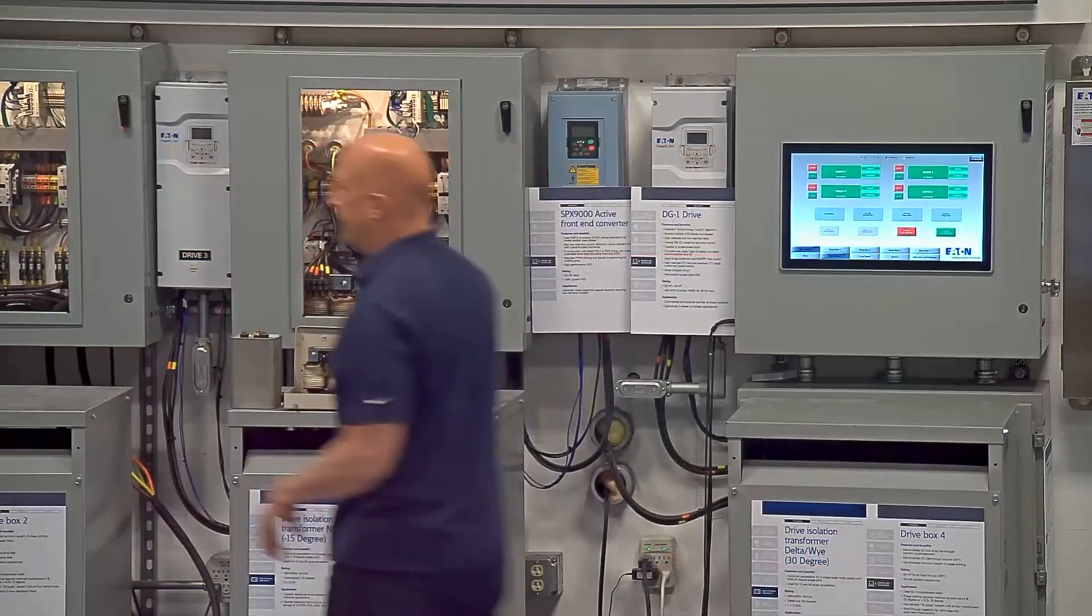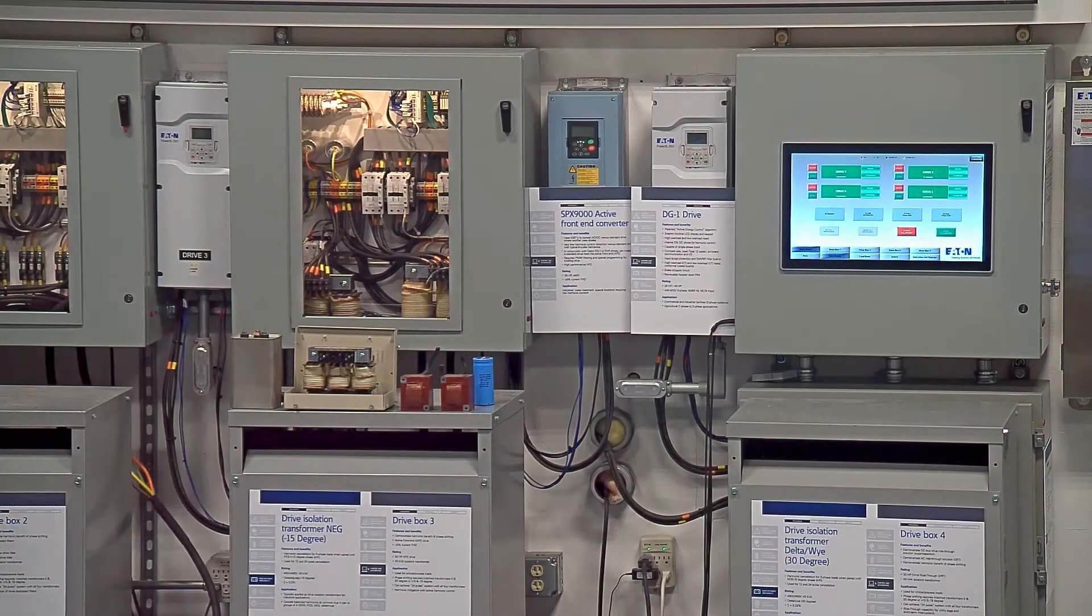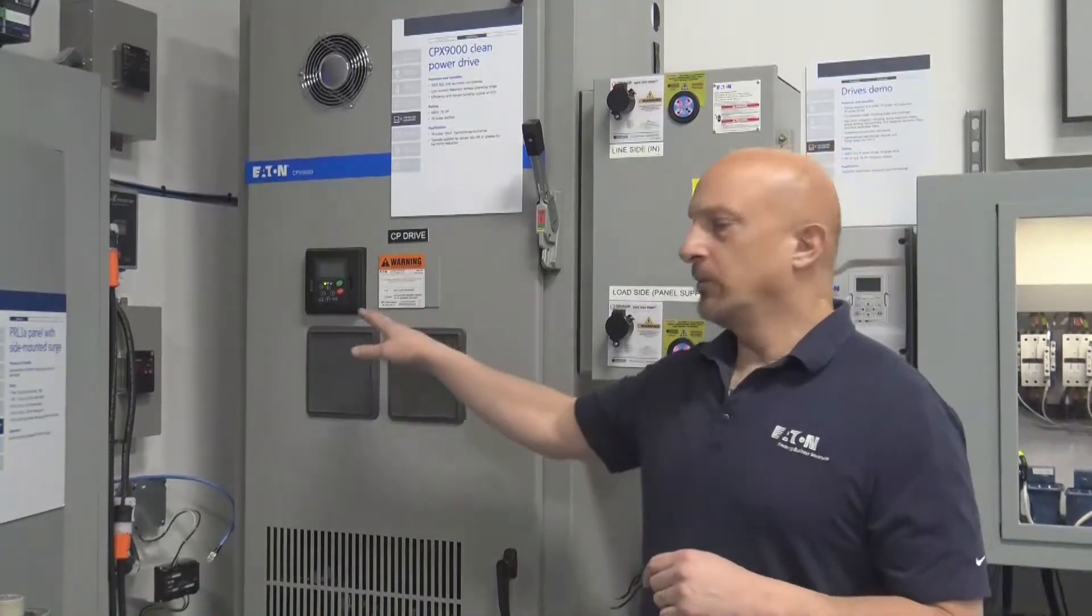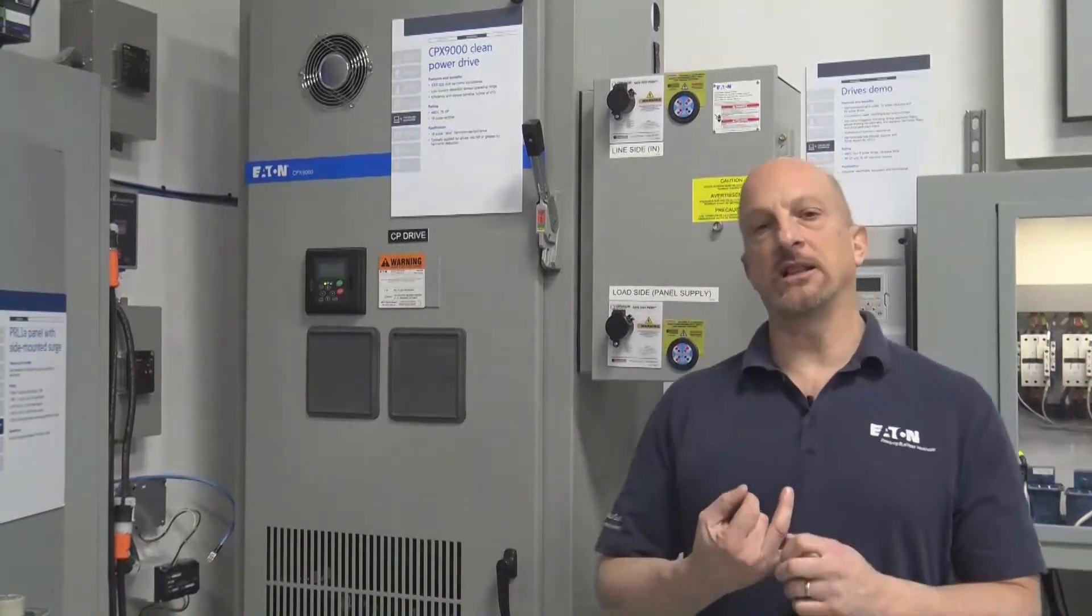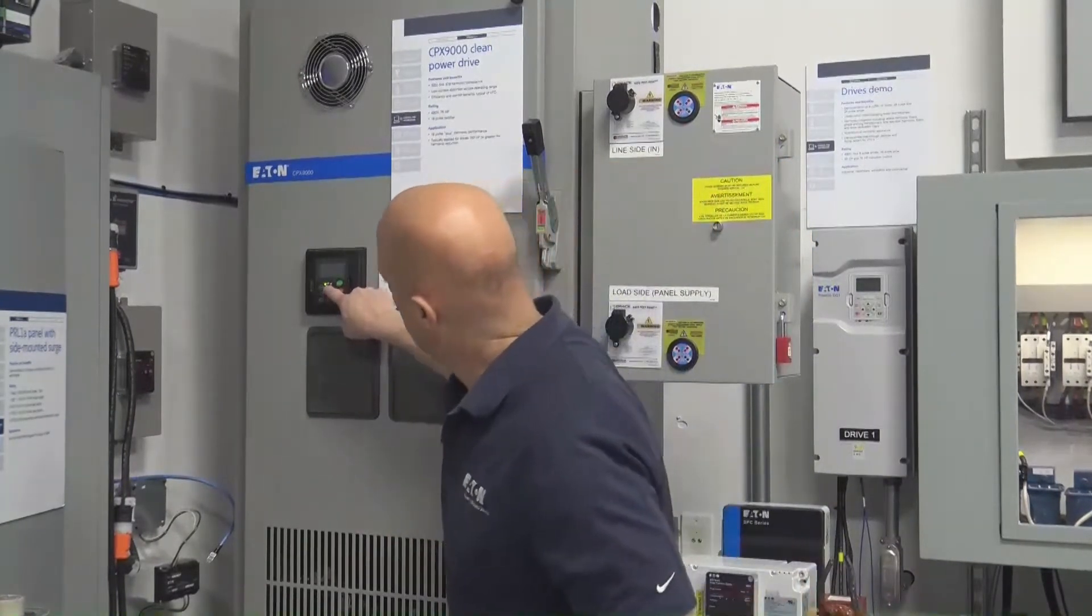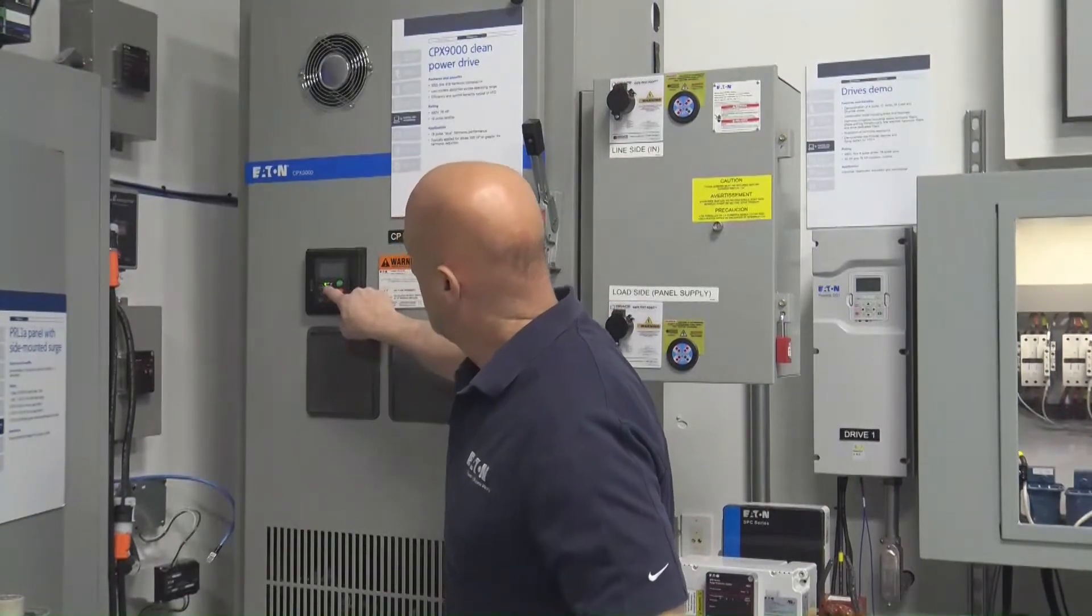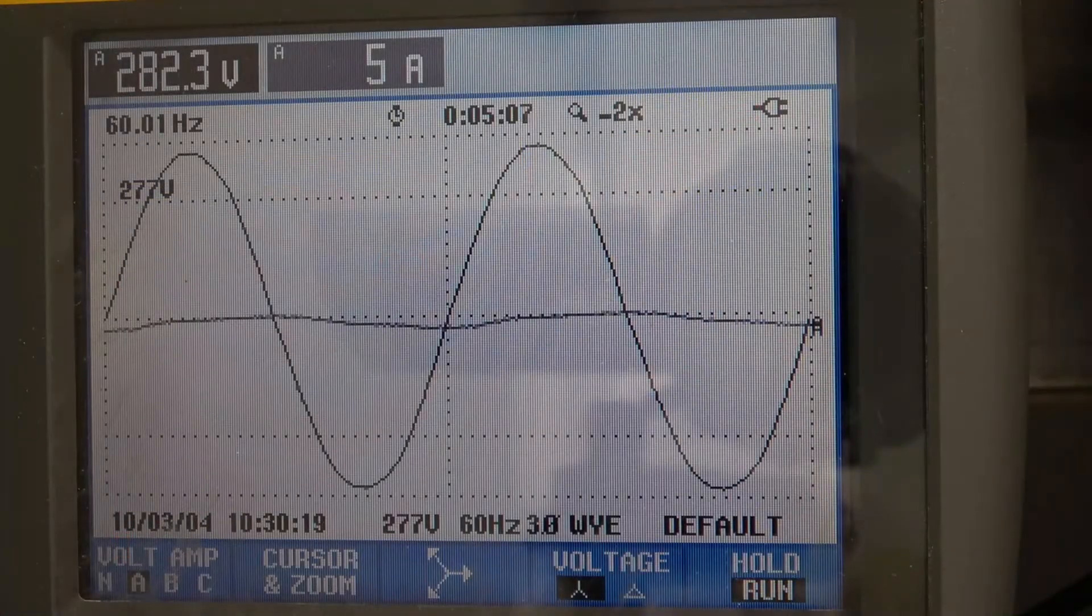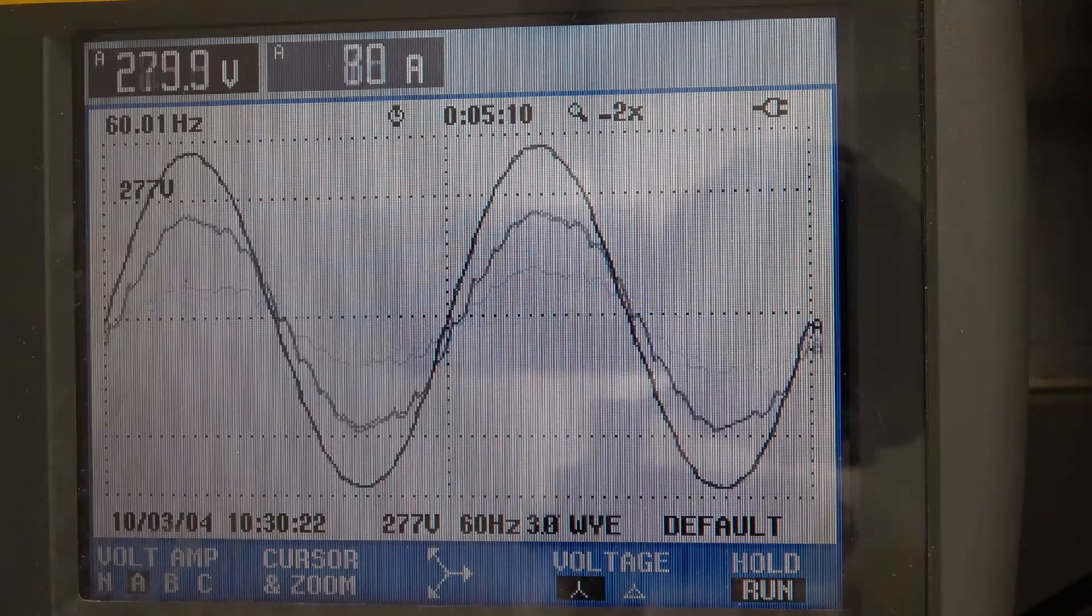Let's take a look at an 18-pulse drive here. This is an 18-pulse drive. Now we're going to switch over and put the waveform on the screen. I'll run this drive first at full load, 60 hertz load. So we'll run this up to 60 hertz at full load. When we do that and look at the waveform, you're going to notice the 18-pulse waveform for the current.